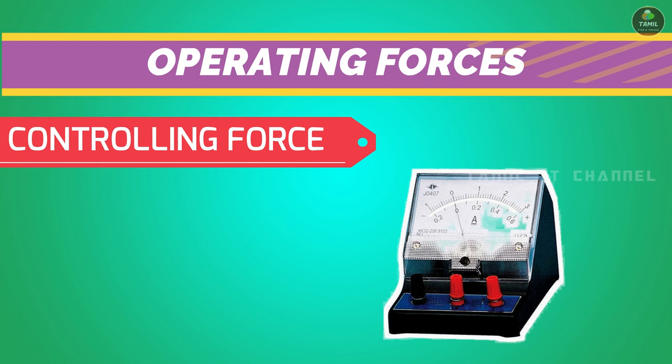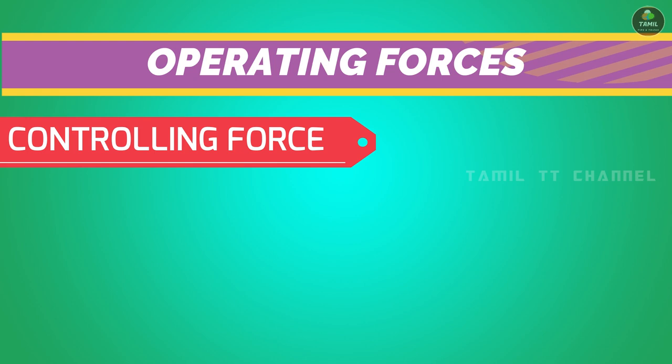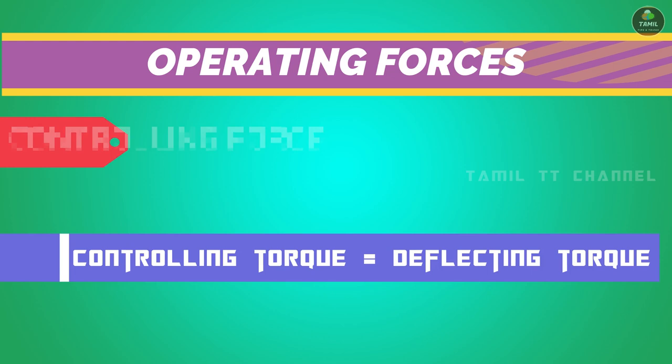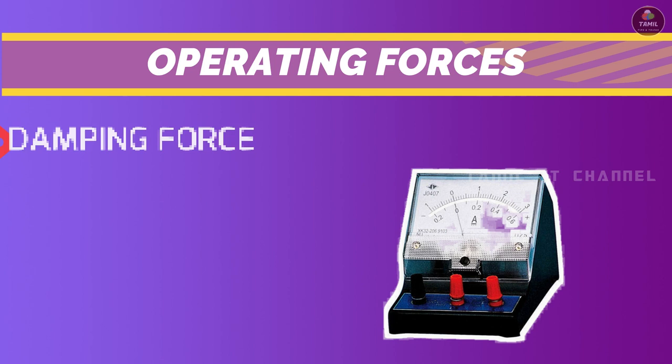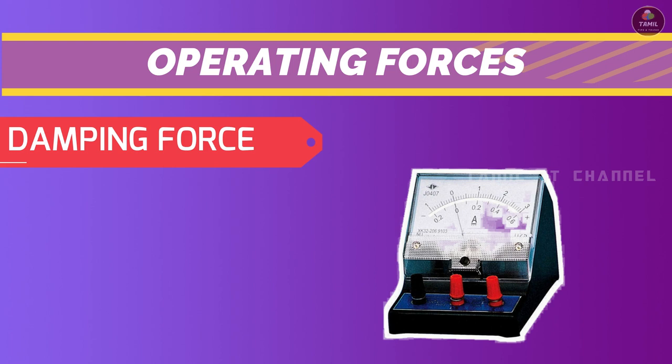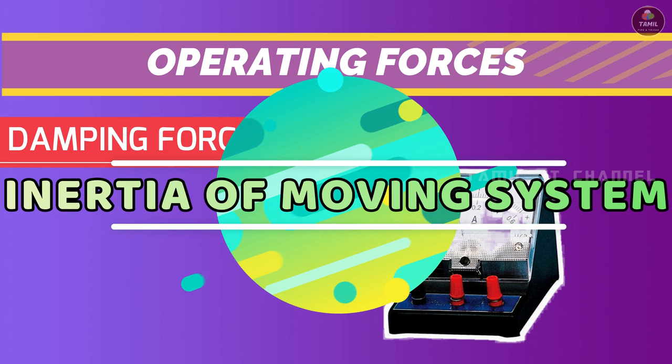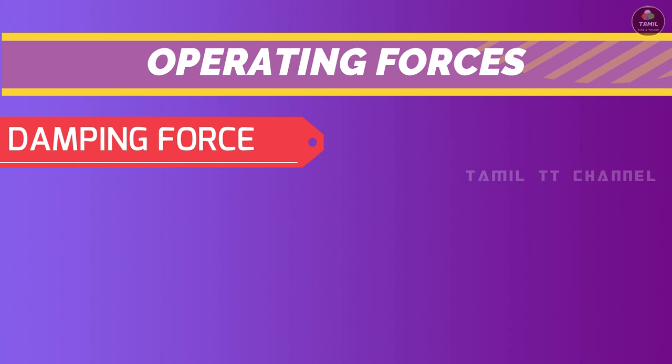The third operating force is the damping force. Damping force reduces oscillations of the pointer and brings it to rest quickly, opposing the inertia of the moving system. There are three types of damping: underdamping, critical damping, and overdamping.